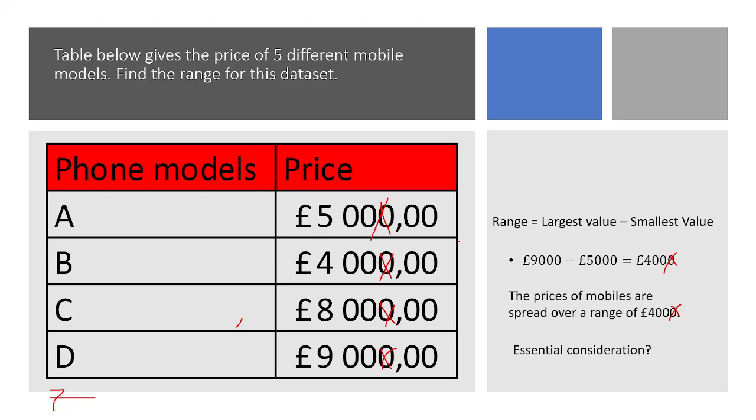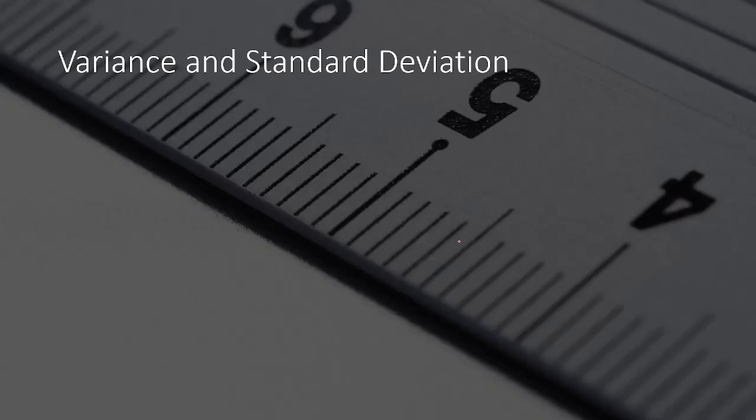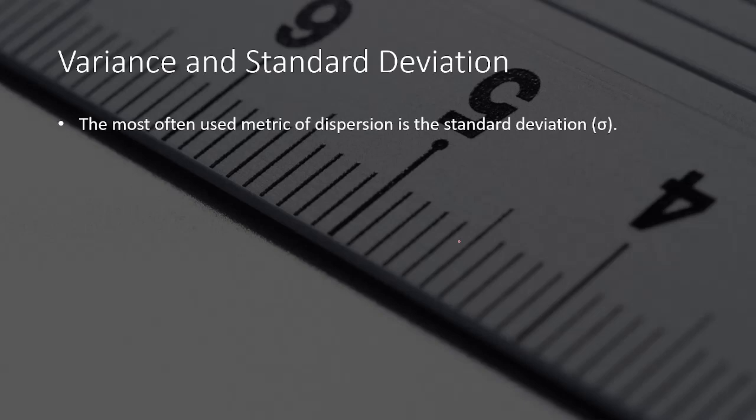pretty much. And that was the range. Let's look at the variance and standard deviation. So the most often used metric of dispersion is standard deviation. And it looks like this. It's a σ with a thingy magic over there. So that's standard deviation. So every time you see this, think of standard deviation and dispersion.